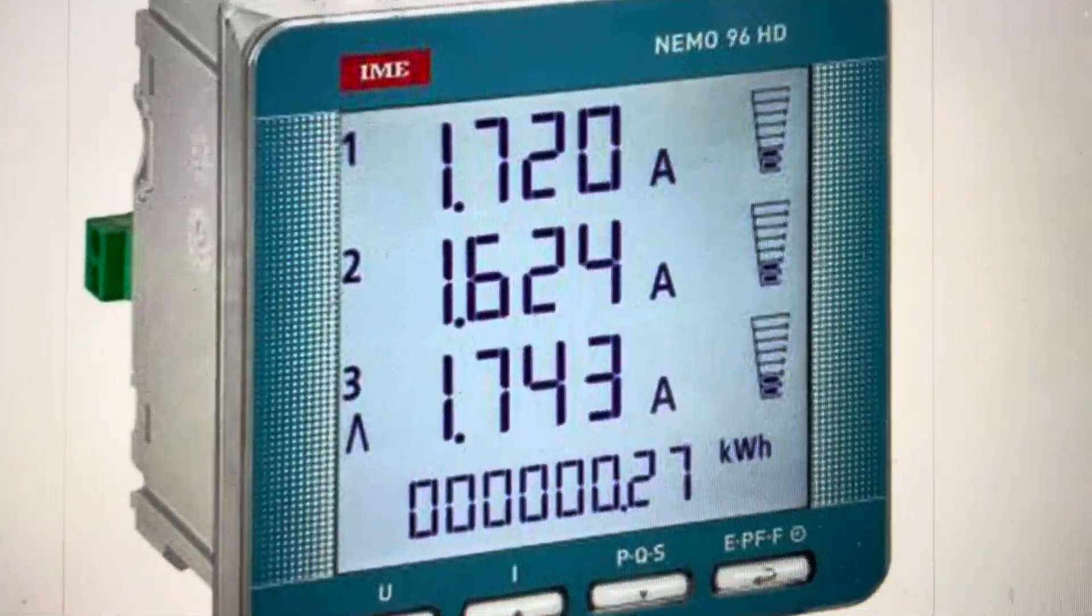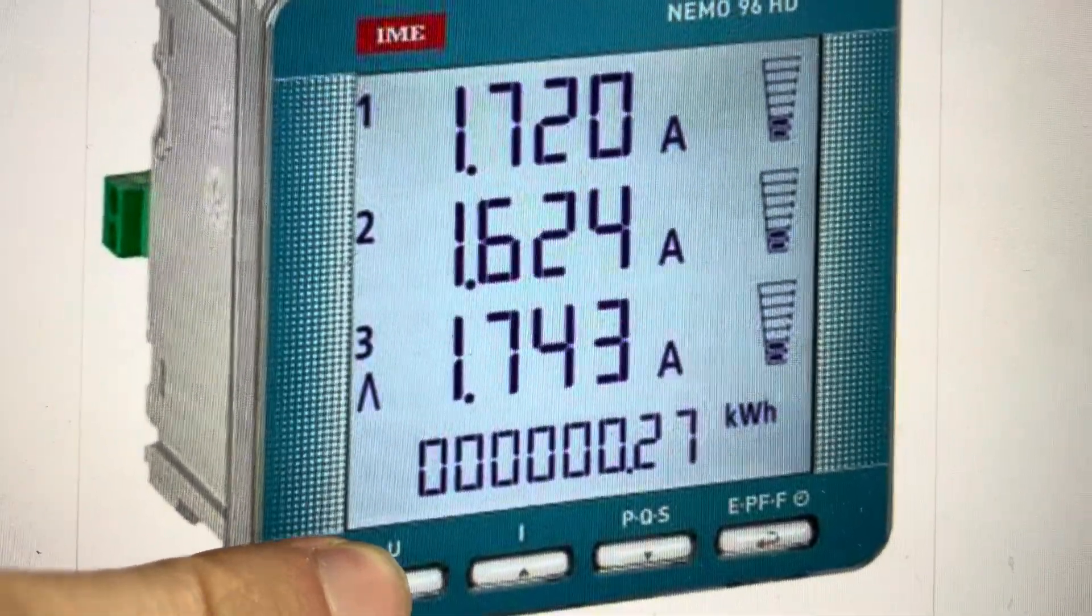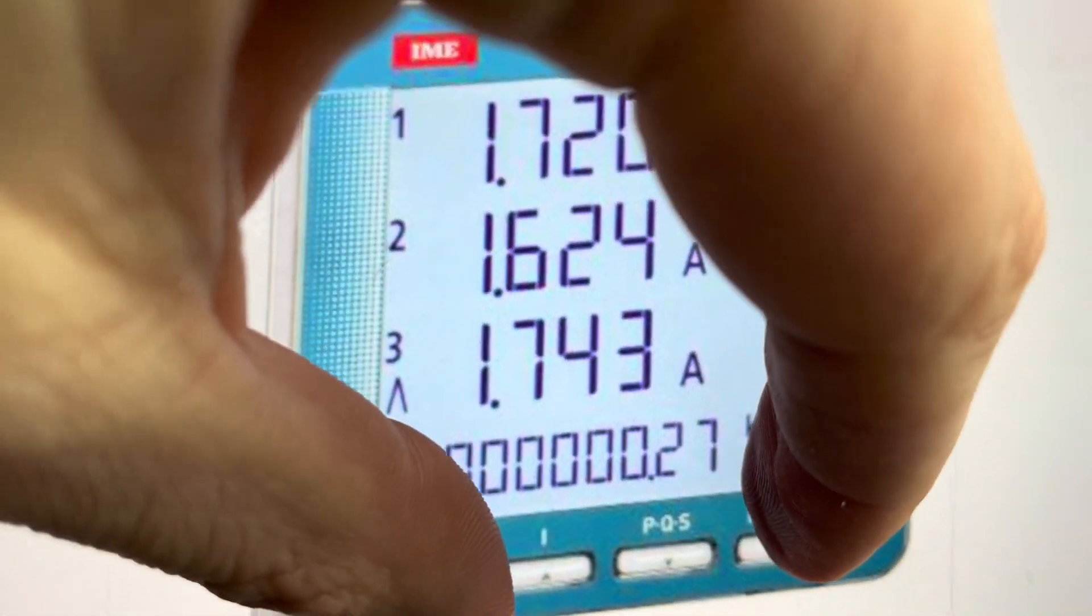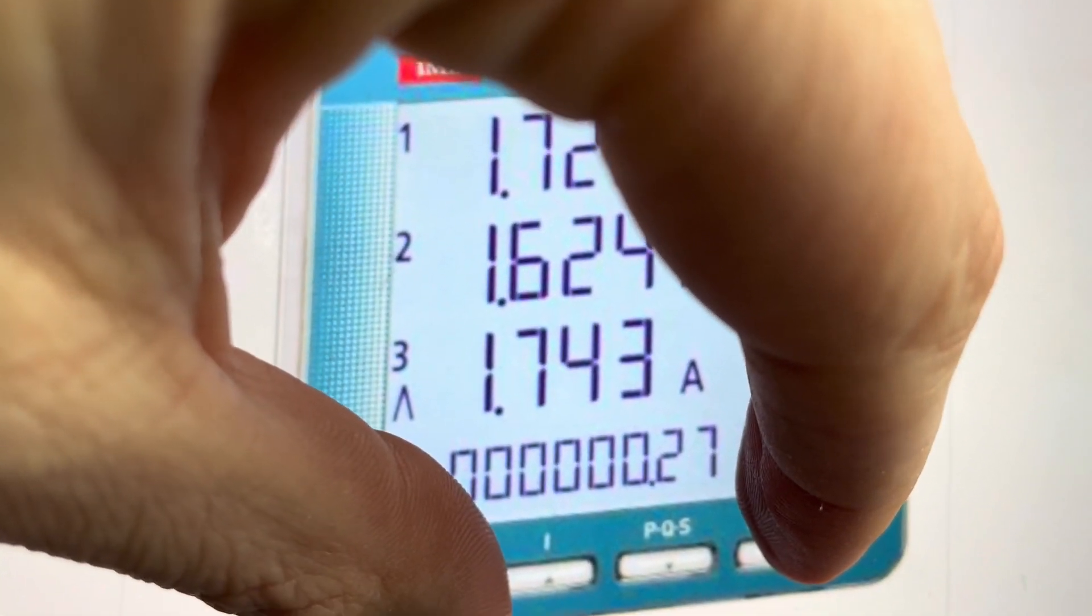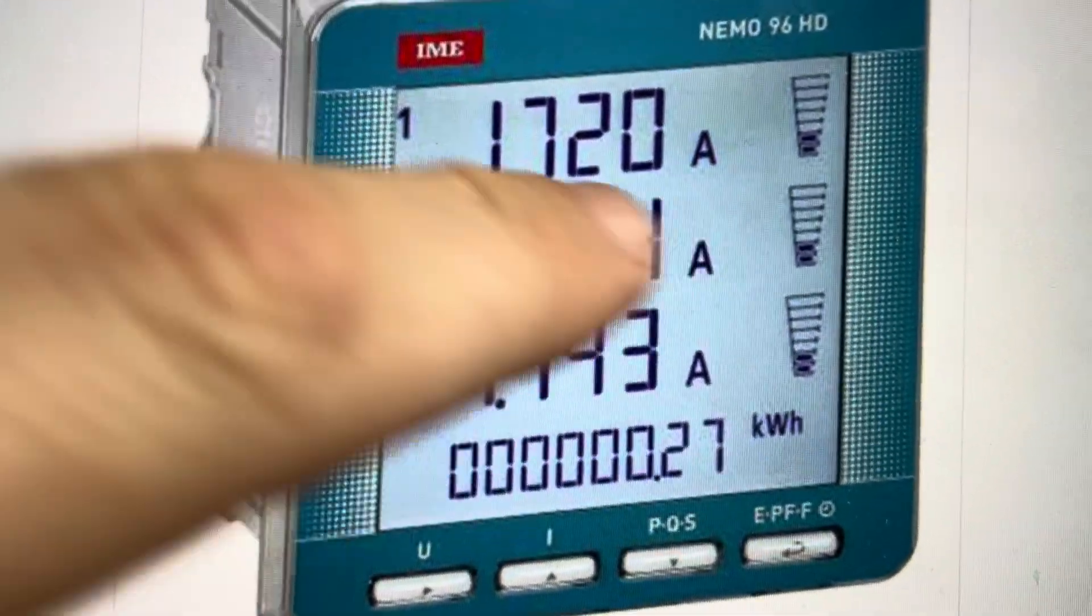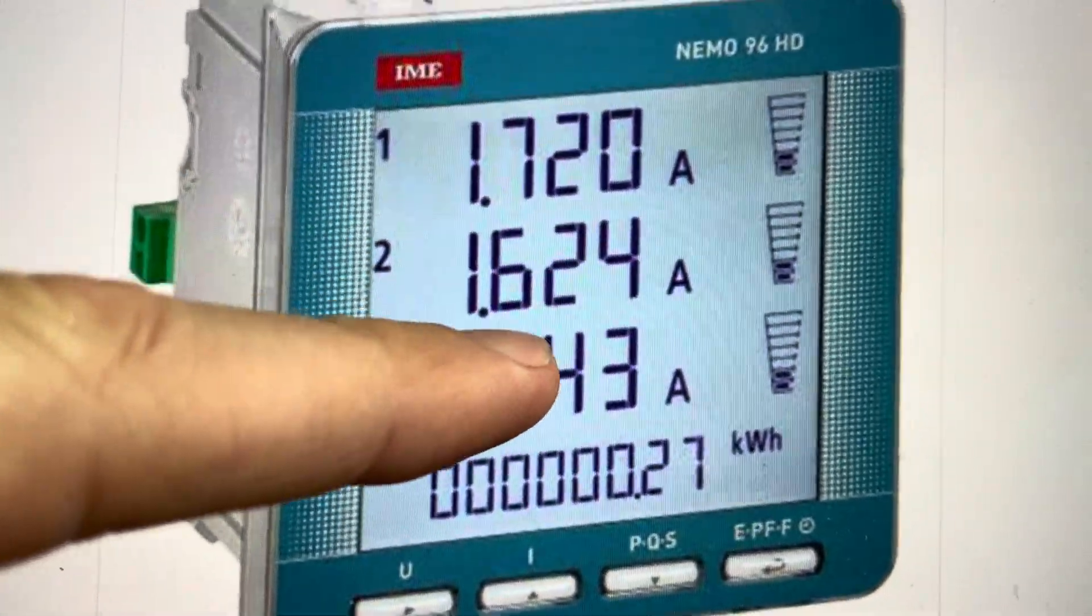So what you're going to do is find this right arrow here and this back button here, or enter button here. And we're going to press the two of them simultaneously. You're just going to keep them pressed simultaneously until it pops up on the screen. You'll see it'll say R-E-S for reset and it'll say no.